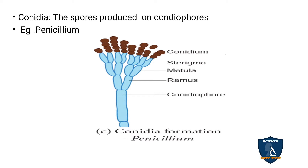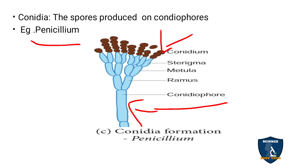Conidia are spores produced on the conidiophore — the stalk of the conidia is called conidiophore. If they ask about conidia, you have to write: spores produced on the conidiophore are called conidia. Example: Penicillium.